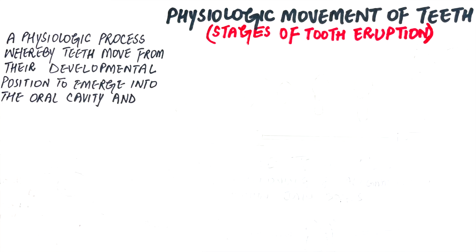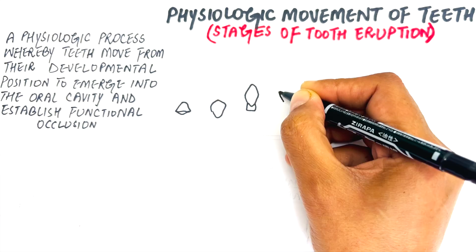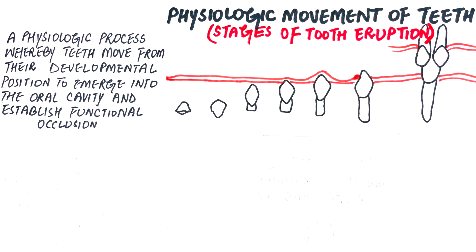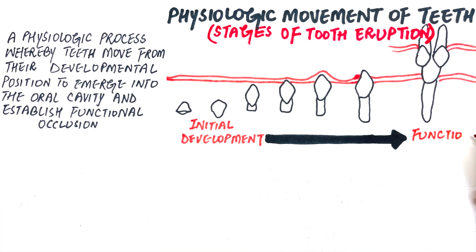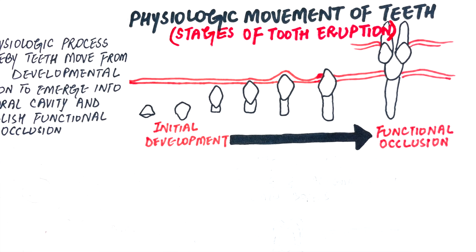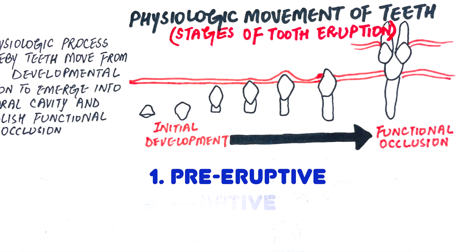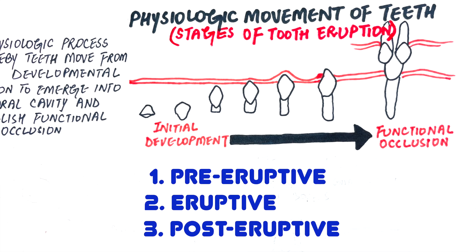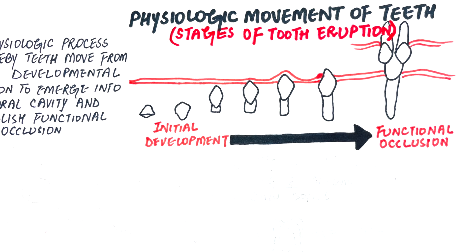Eruption is the physiological process whereby teeth move from their developmental positions within the jaw bones to emerge into the oral cavity and establish functional occlusion with teeth in the opposing arch. It is a lifelong continuous process that can be described in three main phases: the pre-eruptive, eruptive, and post-eruptive stages. The stages apply to both primary and permanent dentition.